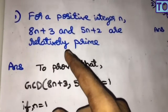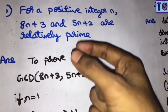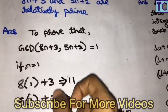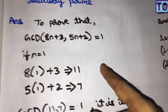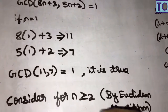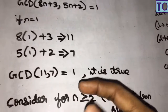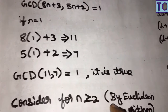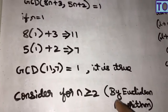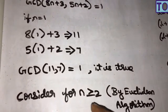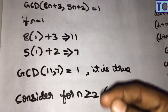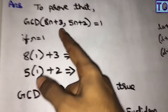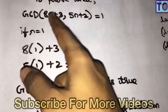We choose the Euclidean algorithm to prove relatively prime. There is a theorem — you can see it in the algebra and number theory subject playlist. We will use the Euclidean algorithm, with n greater than or equal to 1.